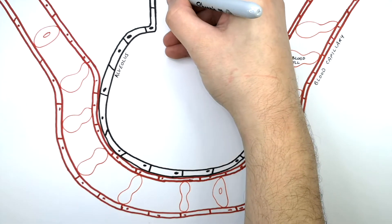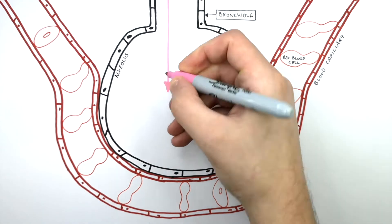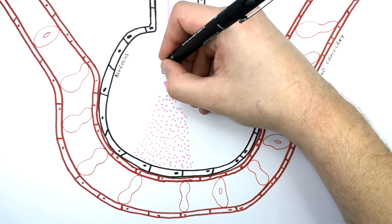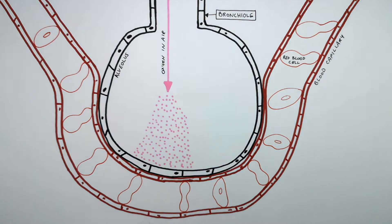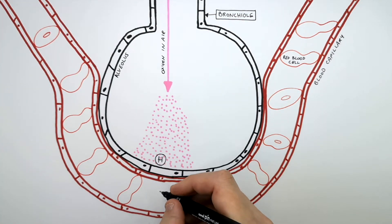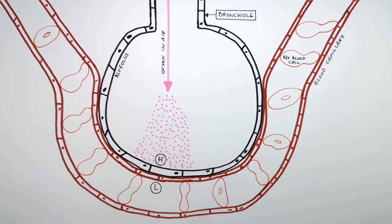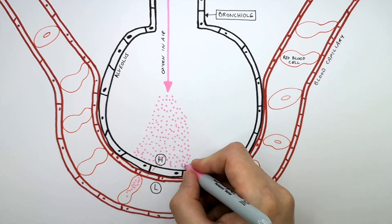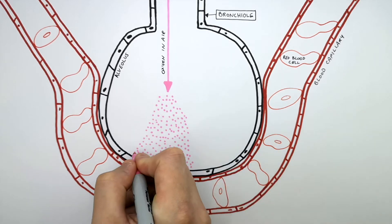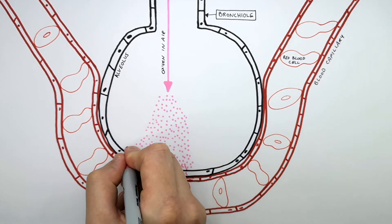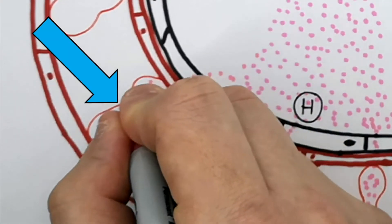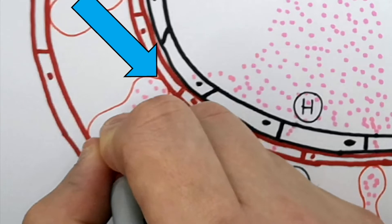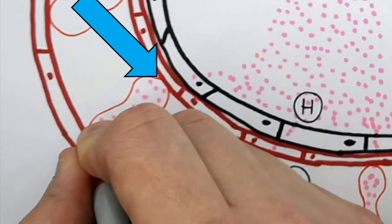When air is inhaled, we breathe in air that contains oxygen. The pink dots here represent oxygen that we breathe in — oxygen in a high concentration in the alveolus, and there is a low concentration of oxygen in the capillary. This means that oxygen is going to diffuse from high to low concentration through the alveolus's one cell thick wall, then through the one cell thick wall of the capillary and into the red blood cells. The reason the capillary's lumen is one red blood cell wide is so the red blood cell is right up against the wall of the capillary, meaning oxygen has less distance to travel into the red blood cell.